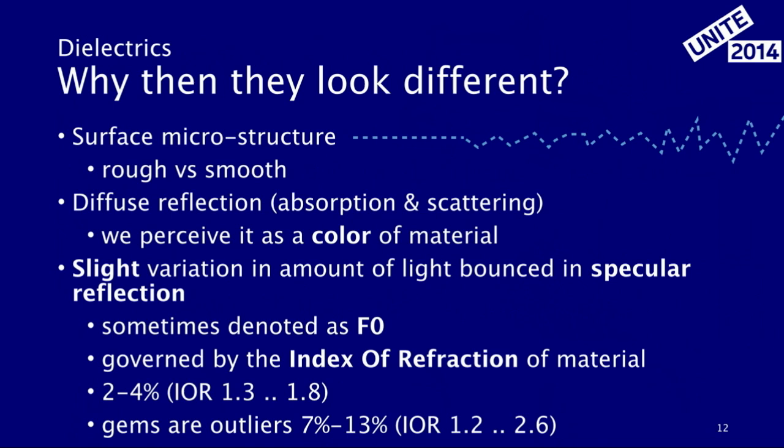This is called subsurface scattering — it's the same thing as happens in our skin. It's just that the distance of subsurface scattering in rock is much shorter. In skin, the light can travel considerably longer than in rock. What makes rock look different from plastic? They mostly look different because of color and the roughness of the surface. If you polish marble, it becomes really hard to distinguish it from polished plastic. The difference in the amount of light reflected between dielectrics is very small — usually between 2% to 4% for plastics, glass, and water. Crystals and gems can reflect a little more, around 10%.